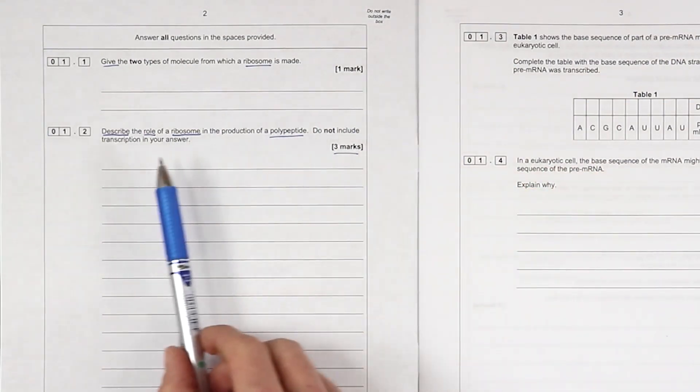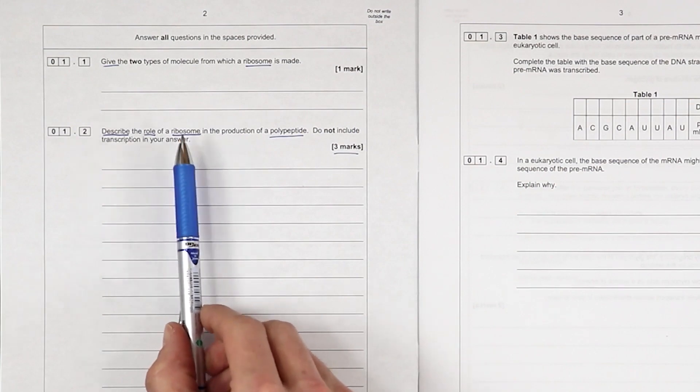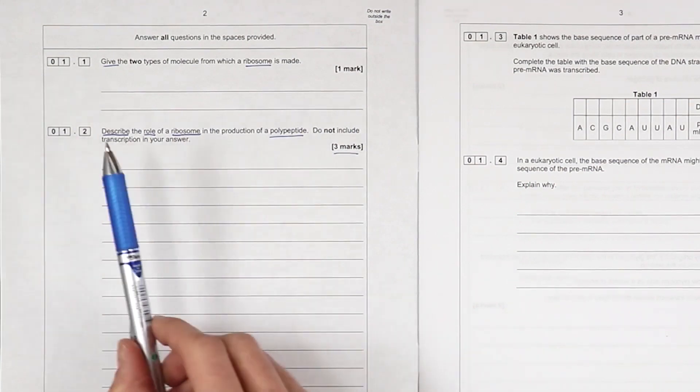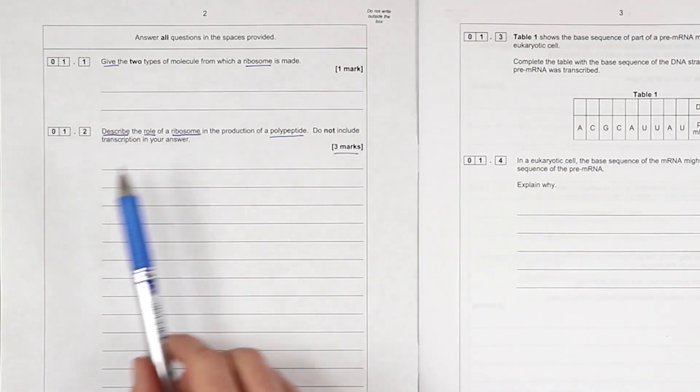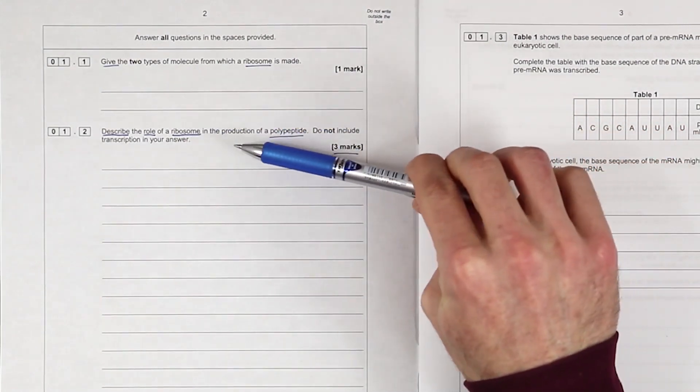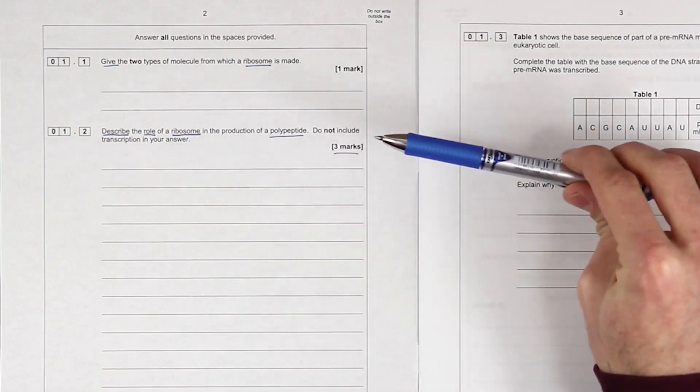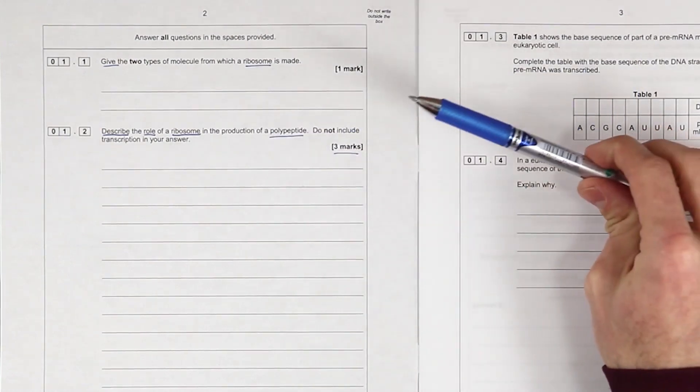What does it do? So we're starting with basically a bit of a description of translation, but in the context of what does the ribosome do. So you're not just describing, you're not going into your standard translation - although some of that will get you marks here. You're looking at what does the ribosome do specifically. What's the role of that in the formation of a polypeptide chain?